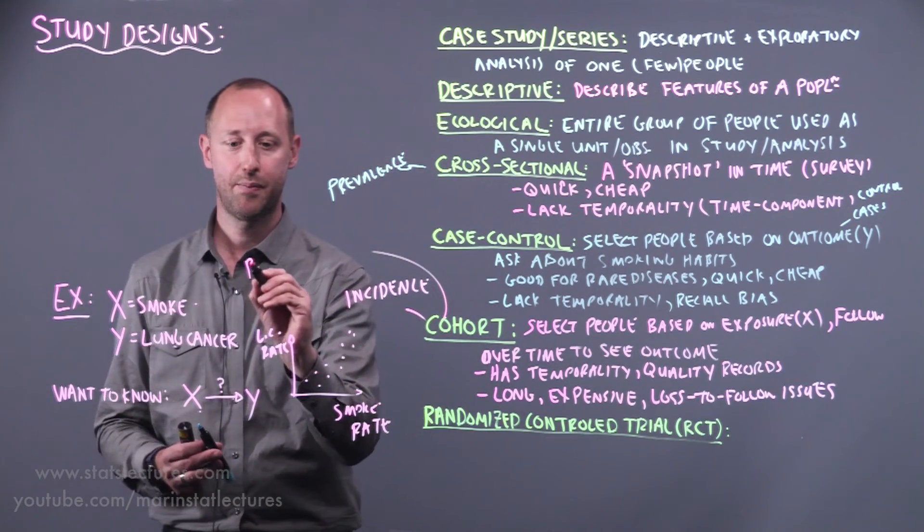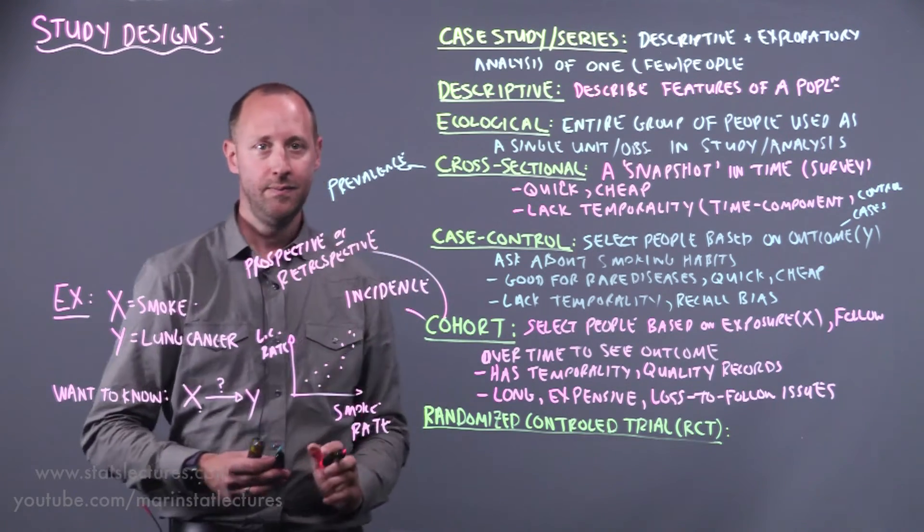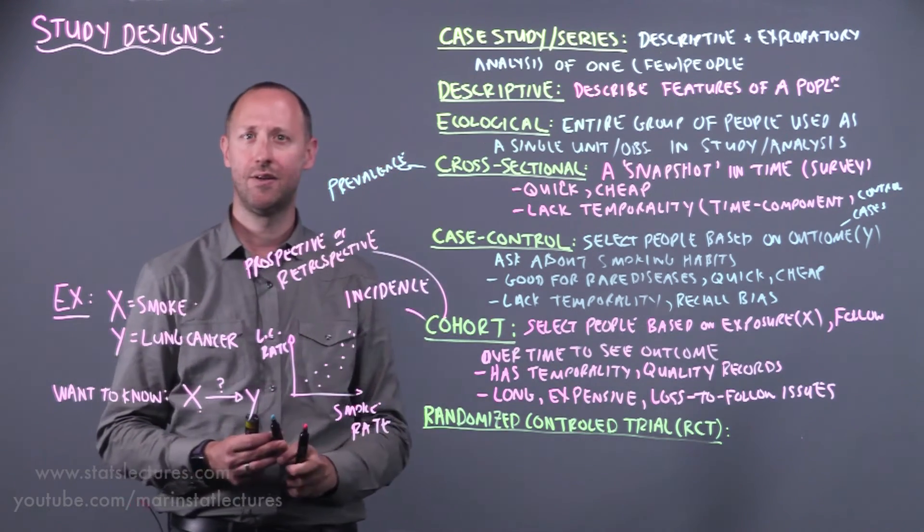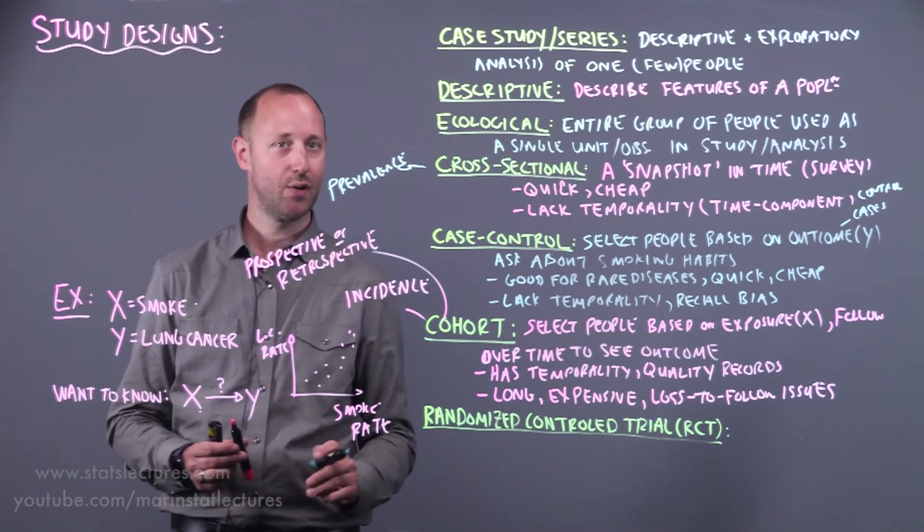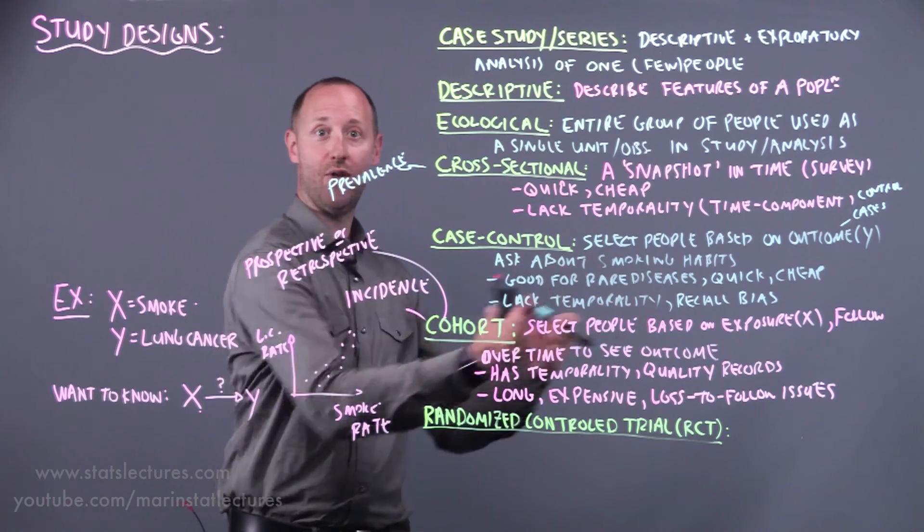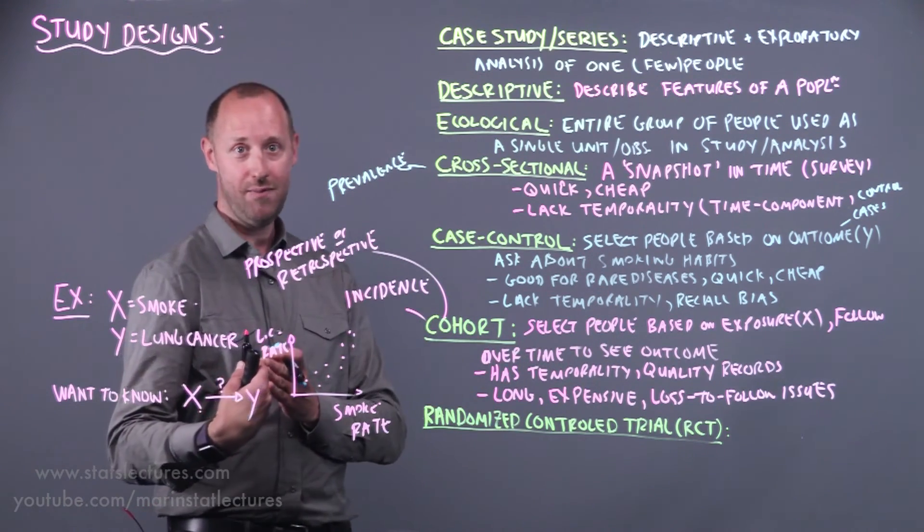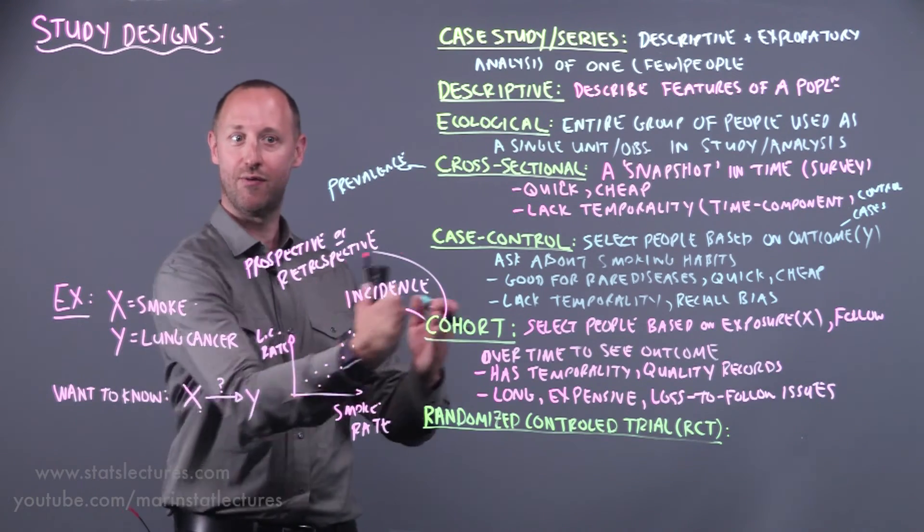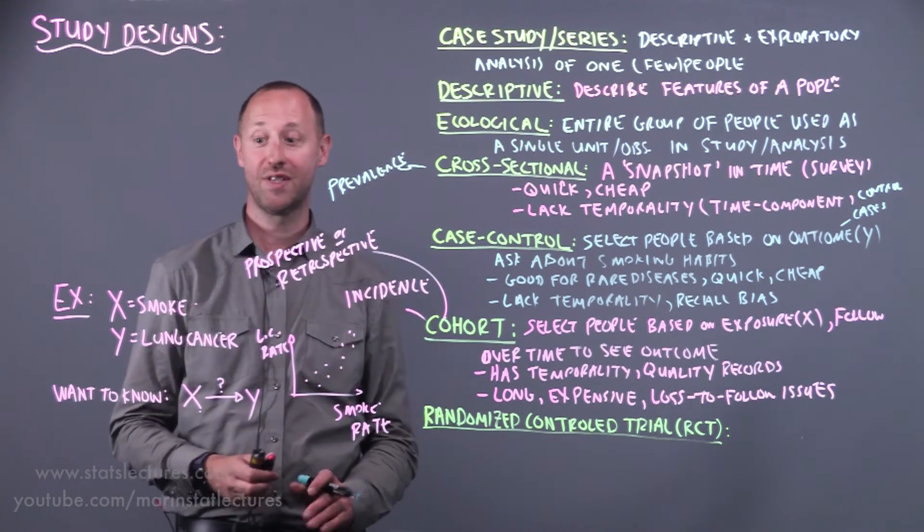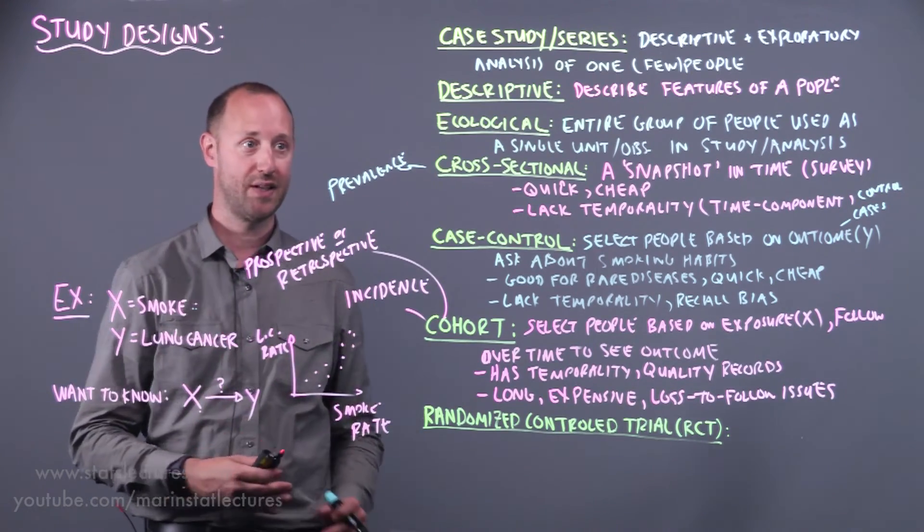Cohort studies can be prospective or retrospective. We won't get into the details here, but just to say it quickly: prospective is where we get smokers and non-smokers and we follow them forward in time. Retrospective cohorts is where we might look back in time for the exposure and non-exposure and then follow from there. In a cohort we're selecting people based on whether or not they smoke, whether it's now or retrospectively.